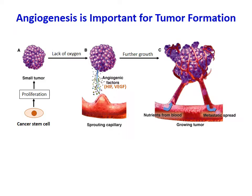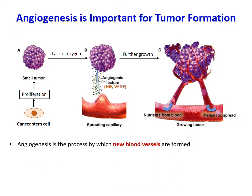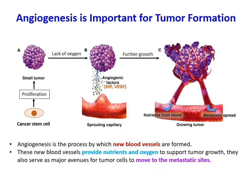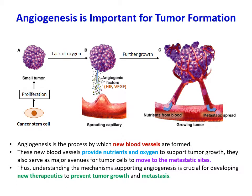Our group focuses on the mechanisms of tumor metastasis, and one of the important steps to metastasis is angiogenesis, or the process of new blood vessel formation. The new blood vessels provide nutrients and oxygen to support tumor growth, and they also serve as major routes for tumor cells to spread to other organs. Therefore, understanding the mechanisms which support angiogenesis would aid in the development of new therapeutics to prevent tumor growth and metastasis.